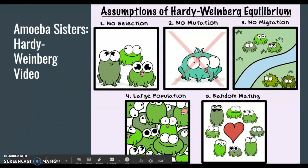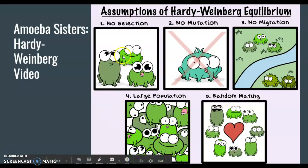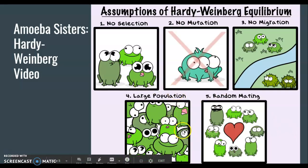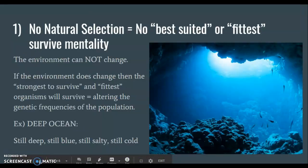Let's talk about what exactly Hardy-Weinberg equilibrium is. In order for no evolution to happen, you must hit all five of these factors: no natural selection, no mutation, no migration, large population, and random mating. If only one is disturbed — say a few individuals decide to leave — then we're going to start looking at changes, and changes drive evolution.